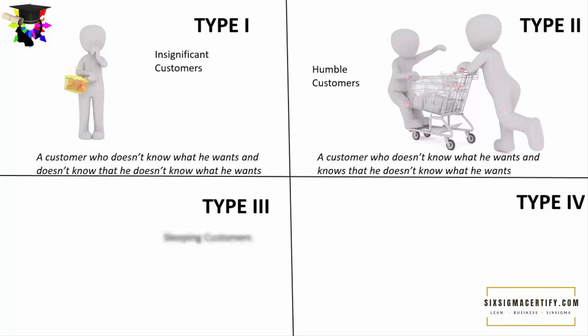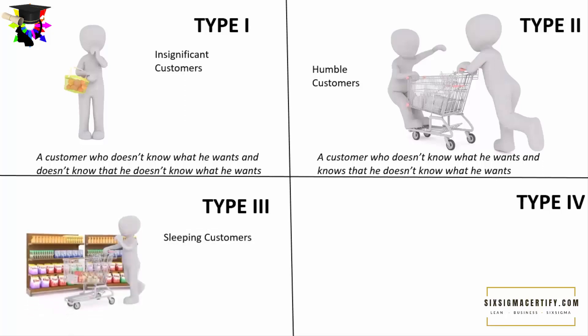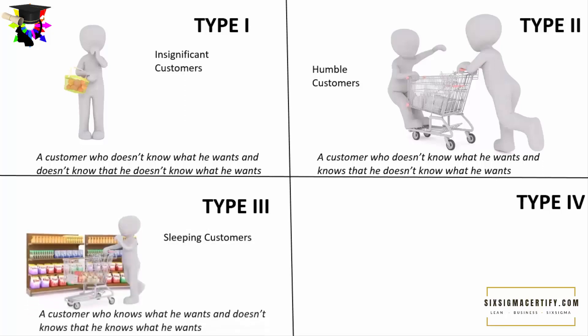Type 3 customers are the sleeping customers. Sleeping customers are those who know what they want but don't know that they know what they want. They know that something is important to them or that a product or service should have certain characteristics, but don't give much emphasis to the fact that they know what they want. These are the sleeping customers.